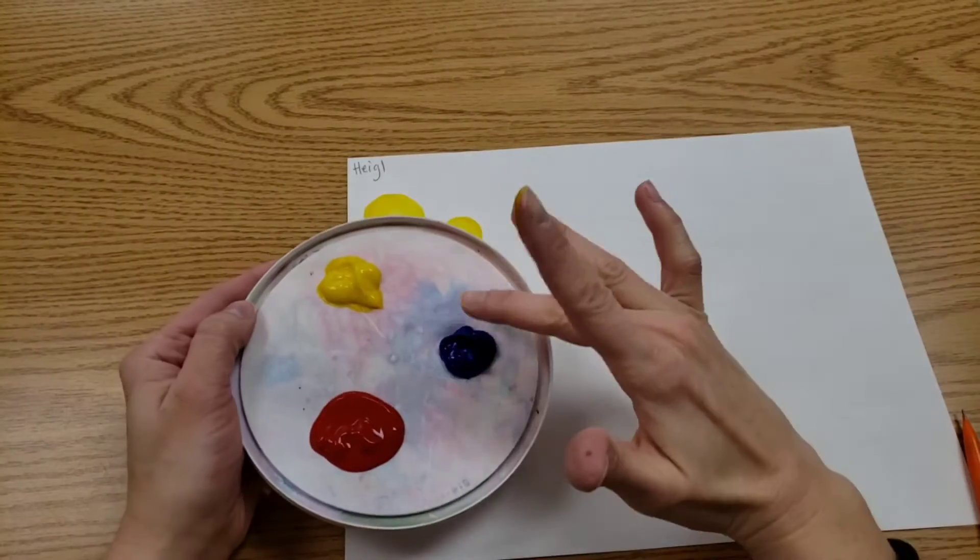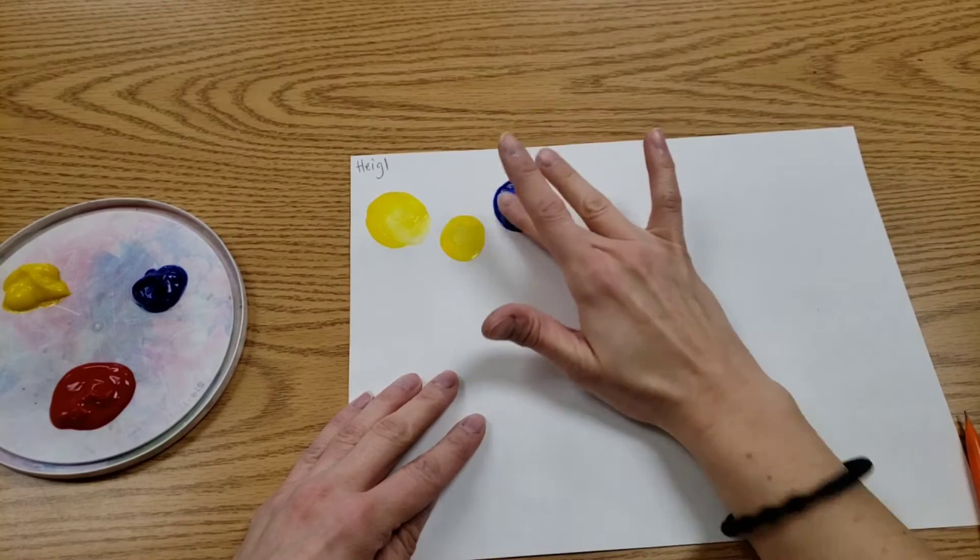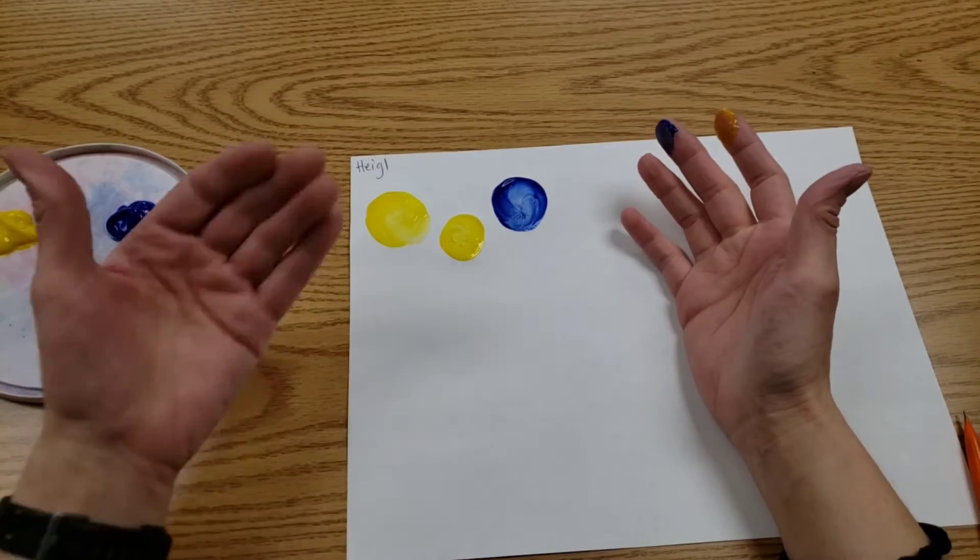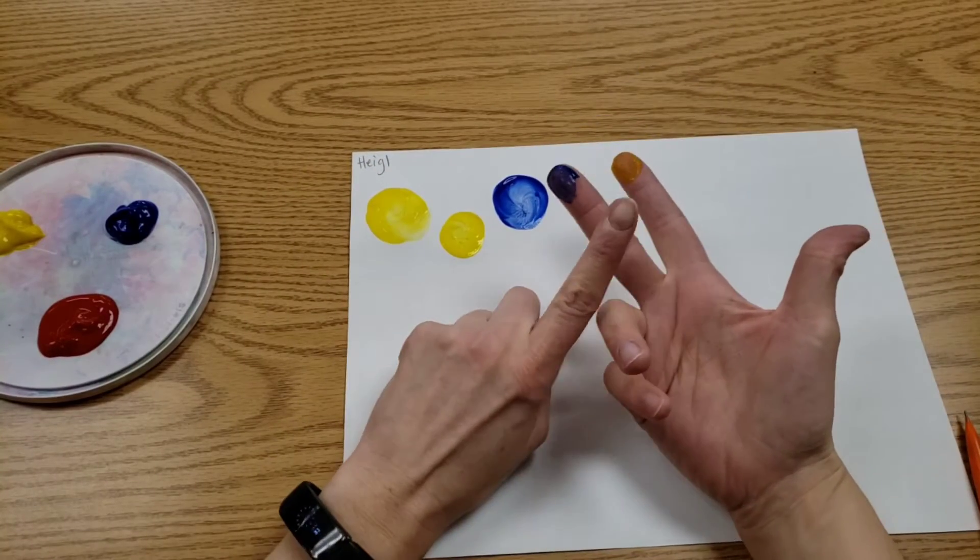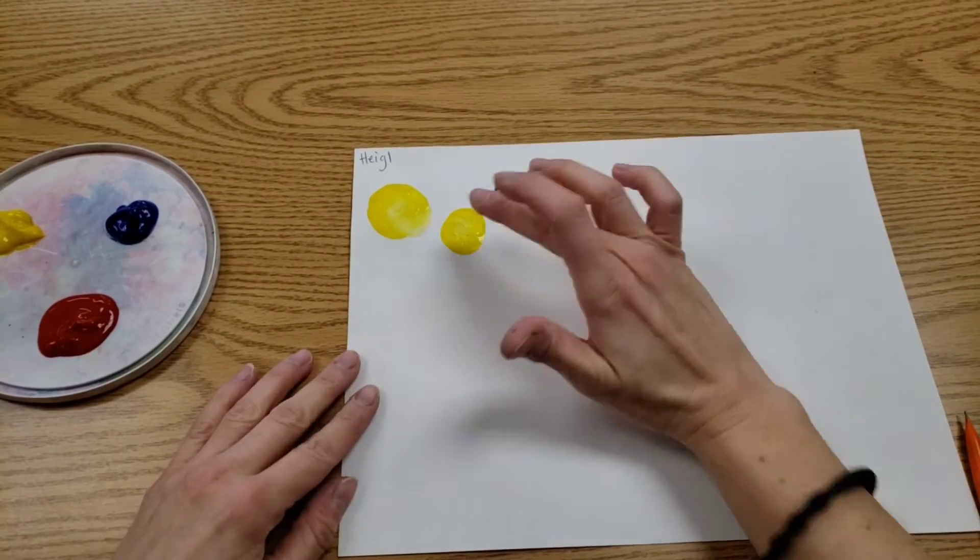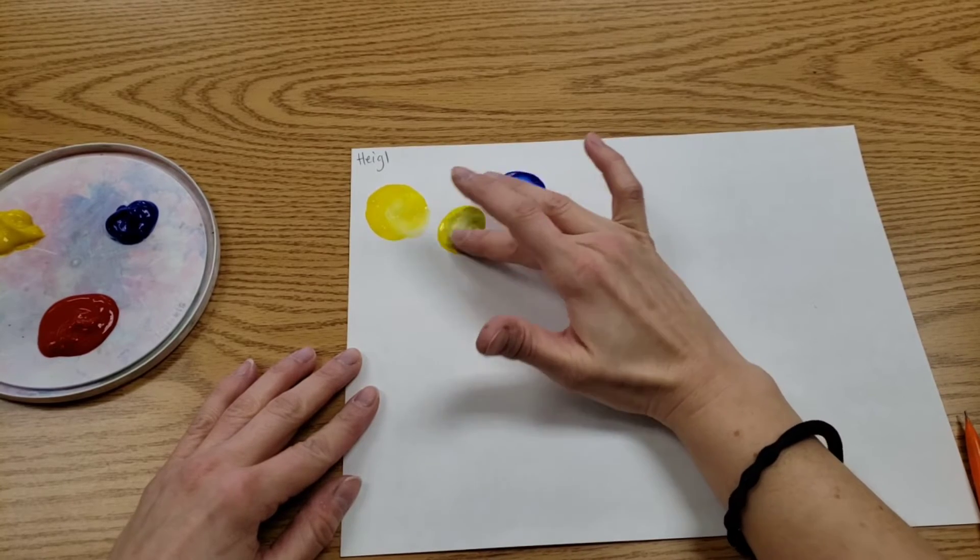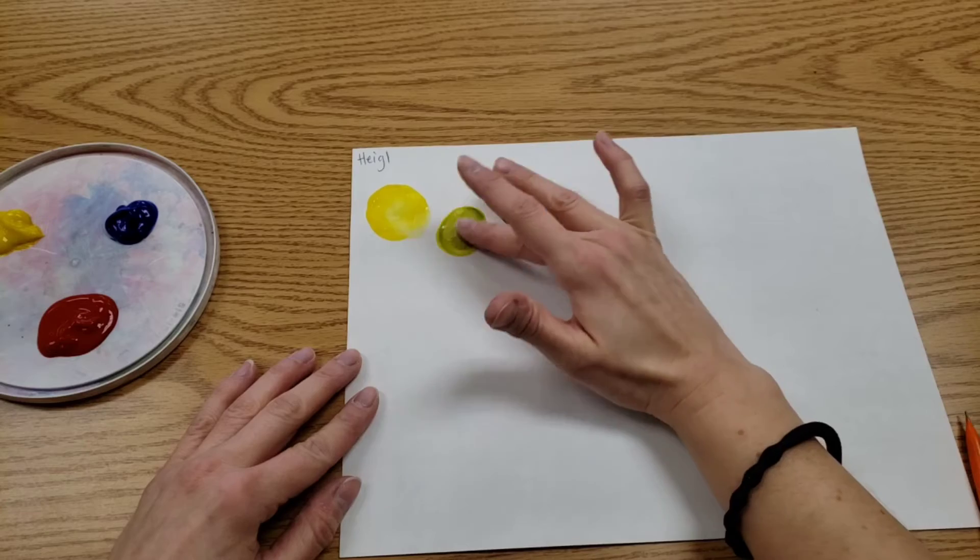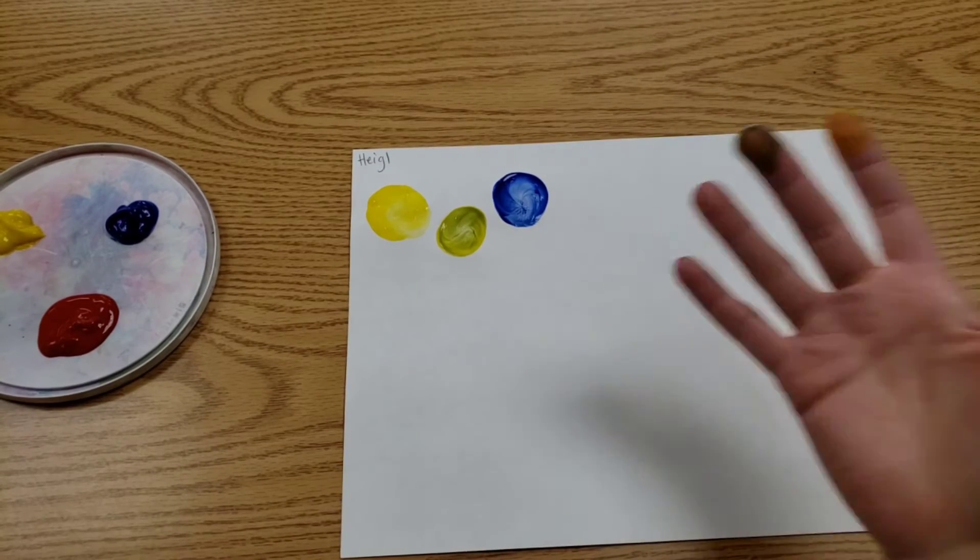Then clean finger goes in the blue. I'm going to make a blue dot that is also big because we're doing color families so it's like we have the mom and the dad and the baby. With what is left on my blue finger, I'm going to put that in the yellow, this little one, and stir. And what do we get? Green. Now my blue finger is dirty, I'm going to wipe it off on my paint shirt.